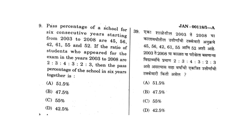For this question, what I did is I added all the percentages and divided by the sum of the ratio. It finally came to 51.5 — that is A, which is the correct answer. I hope friends you answered it correctly.